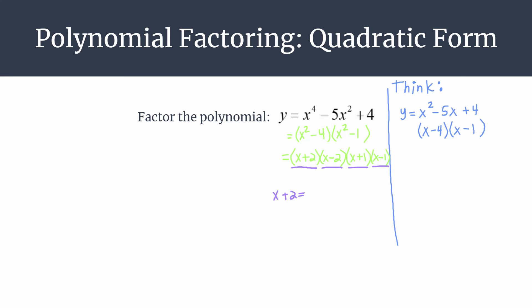For example, x plus 2 equals 0 gives us x equals negative 2. Set each of the other factors equal to zero, you see that you would get x equals 2, x equals negative 1, and x equals 1. So these will all be x-intercepts and that's really useful when you start sketching a graph of a polynomial.